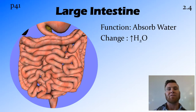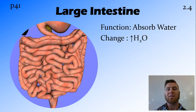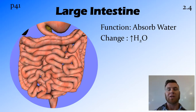The large intestine's function, on the other hand, is to absorb all the water out of what is by this time a waste product before it gets excreted. So what we're going to see in the large intestine is that as the blood passes it, it's going to increase in the amount of water in the blood.